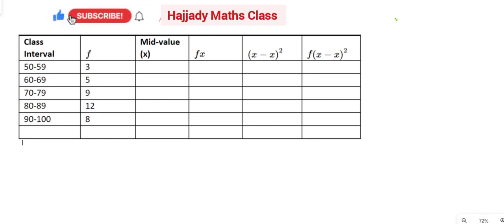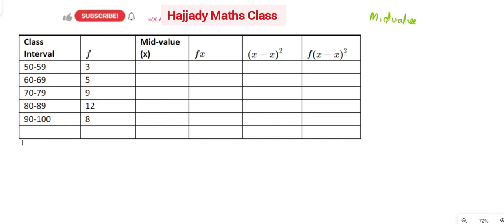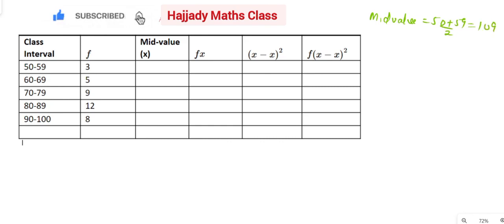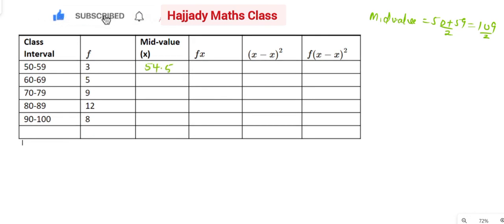To get a middle value, since our class interval is 50 to 59, our mid value will be equal to the average of the two — that is 50 plus 59 over 2, which gives us 109 over 2, which is 54.5. If the same thing is done to 60–69 we get 64.5, then 74.5, then 84.5.